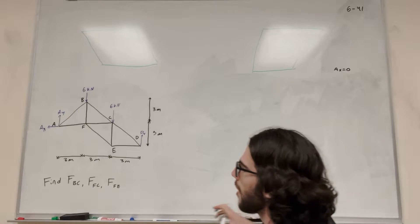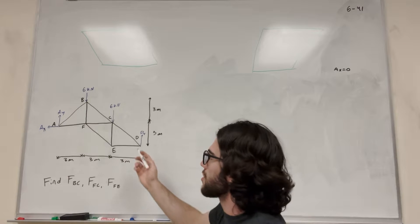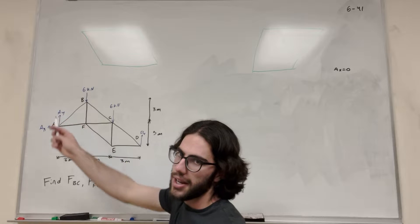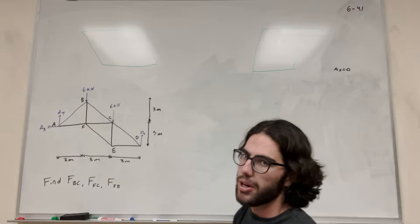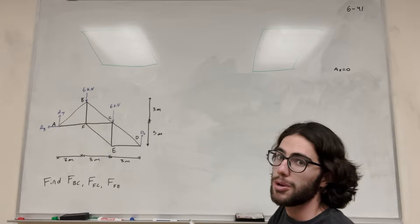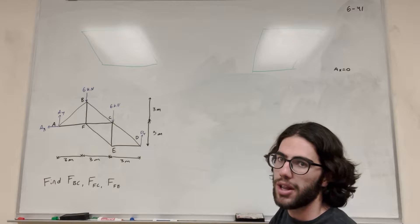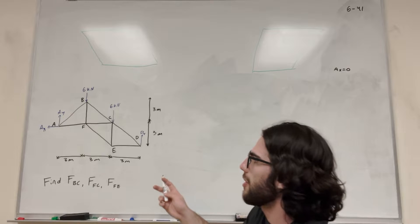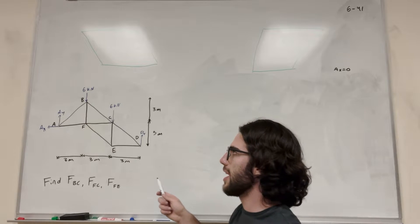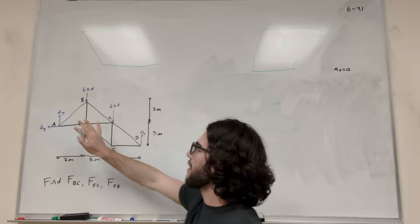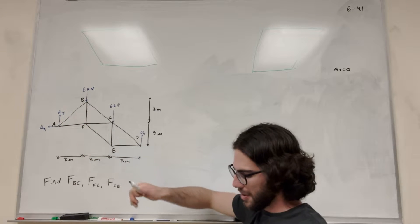If we're going to take sum of the forces in Y, we're going to have two unknowns — D of Y and A of Y. We don't know both of those, so we're going to have to basically do a moment to find one of them. If you take the moment around a certain point, it's going to get rid of one of them.